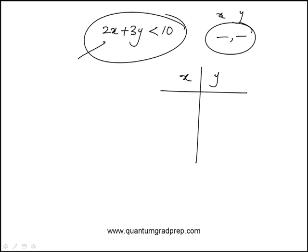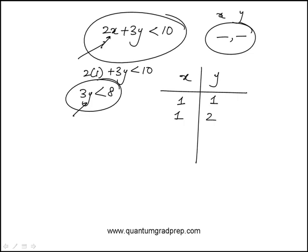x and y are positive, so the least value of x is 1. I'll just replace x as 1, 2 times 1 plus 3y less than 10. This is 3y less than 8. What could y be? y could be 1, y could be 2, y can't be 3 because then this would be 9, which is not less than 8.